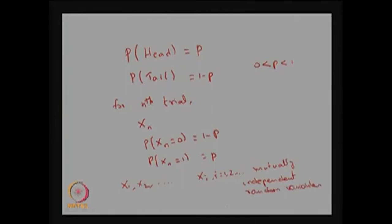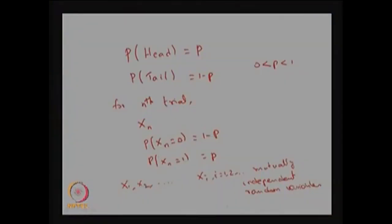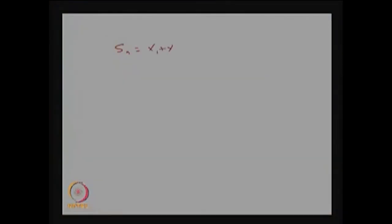So in this random experiment we toss a coin infinitely many times, and for any nth trial we define the random variable Xn, which takes value 0 with probability 1-P and value 1 with probability P, corresponding to tail and head respectively. Now I am going to define another random variable, the partial sum of the first n random variables. So Sn is the sum of the first n random variables, and therefore Sn gives the number of heads appearing in the first n trials.